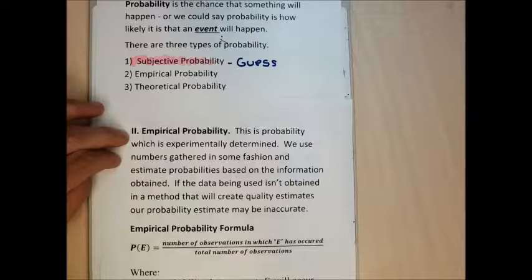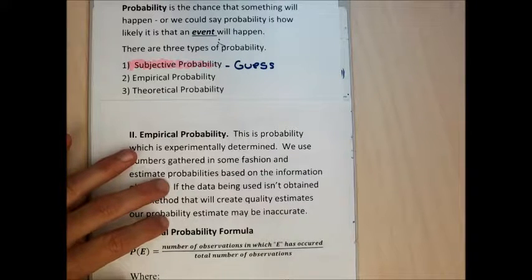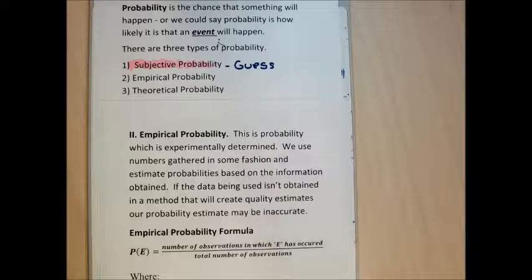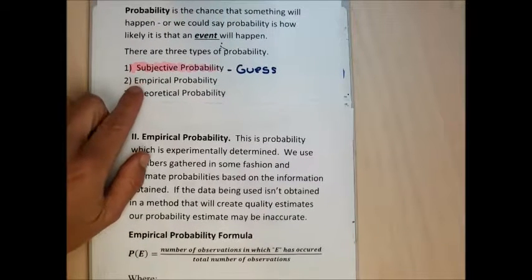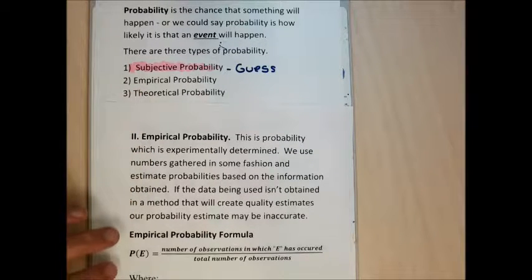Empirical probability is probability which is experimentally determined — we gather numbers in some fashion and use those numbers to estimate probabilities. If you're using data to estimate probabilities, your estimation is only as good as the data collected. If you didn't use sound statistical methods to gather the data, then your probabilities might not be very accurate. We form empirical probabilities by creating fractions, and there's a formula we'll go through shortly.